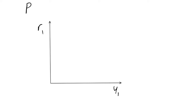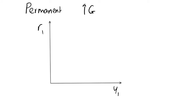The first thing we're going to look at is what happens when we have a permanent change in government spending — specifically, a permanent increase. We have assumed in the previous video that we have a balanced budget, so this increase in government spending is going to come with an identical increase in lump sum taxation to finance it.